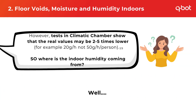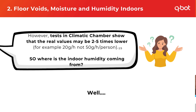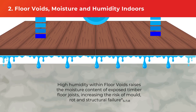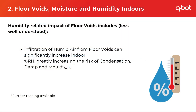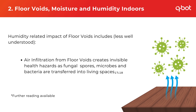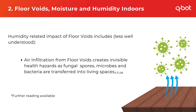However, tests in a climate chamber showed that the real values these indoor sources actually emitted were two to five times lower than we thought. So where is the indoor humidity coming from? Humidity ingress from the floor void is much less well understood and not always considered. Infiltration of humid air from the floor can significantly increase indoor relative humidity, greatly increasing the risk of condensation, damp and mould in the property.